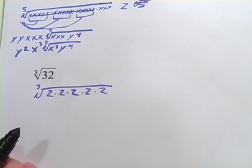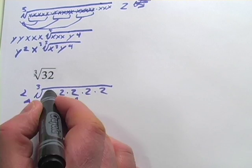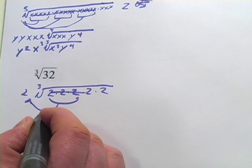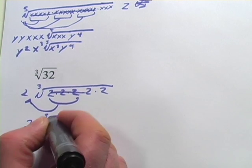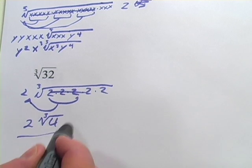When we take the cube root, we pull out three. That becomes a two out here, and it leaves two twos inside. So we get two times the cube root of two times two. Well, that's four. So two times the cube root of four is as simple as we can make that one.